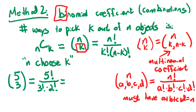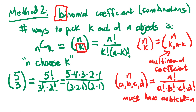So in our case, we had five questions and wanted to pick three — this is just five choose three. With our formula, that's five factorial over three factorial times two factorial. Five times four times three times two times one, over three times two times one, times two times one. Threes cancel, twos cancel, and the two on the bottom cancels with the four on top to give a two. So five times two is 10 — the same answer we got using the other method.